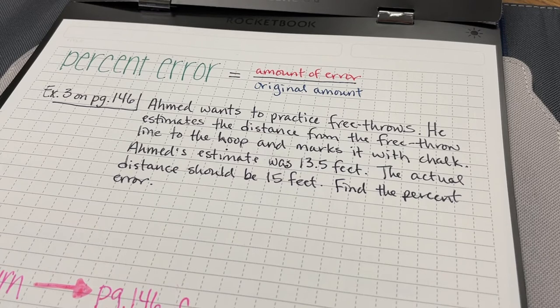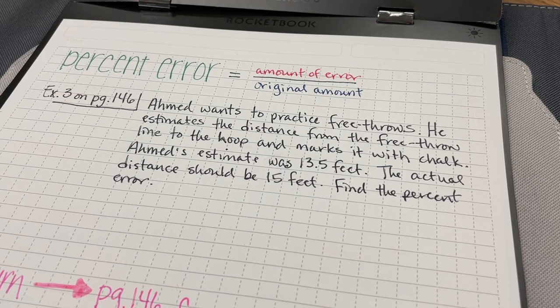So let's use example three to help determine percent error. Ahmed wants to practice free throws, and he estimates the distance from the free throw line to the hoop and marks it with chalk. Ahmed's estimate was 13.5 feet. However, the actual distance should be 15 feet. So we want to find the percent error.